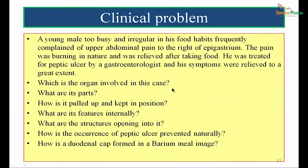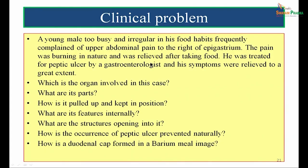Now let us go back to the clinical case: a young male, too busy and irregular in his food habits, frequently complained of upper abdominal pain to the right of the epigastrium. The pain was burning in nature and was relieved after taking food; he was treated for peptic ulcer by a gastroenterologist. The hidden clue here is that burning abdominal pain relieved after taking food is more in favour of a duodenal ulcer. The organ involved in this case is the duodenum.